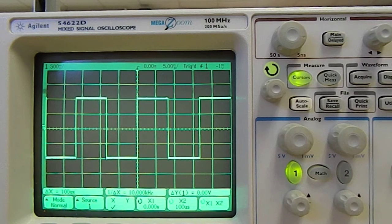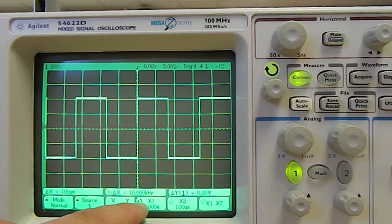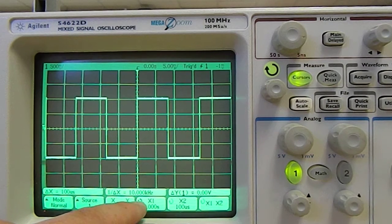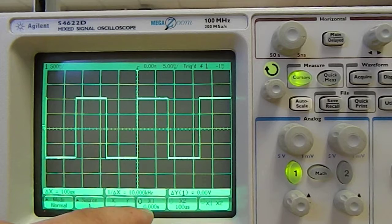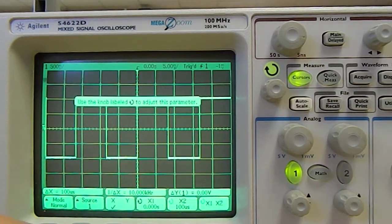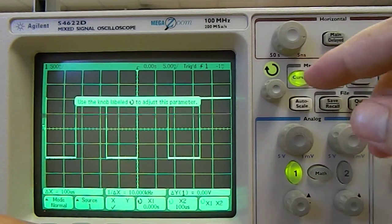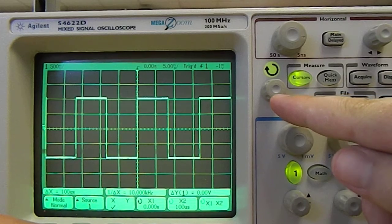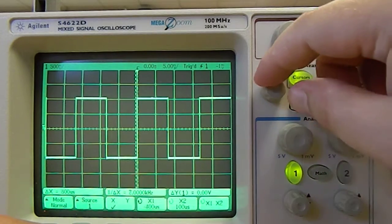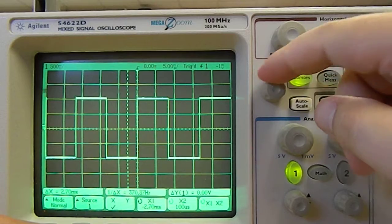Let's start with X, and then whichever one has the little loop in dark, that's the one that you're going to move. So I'm going to choose X1, and then you use this knob right here which has this little loopy thing to adjust the cursor.